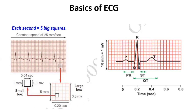In ECG waveforms: P represents atrial depolarization, the QRS complex is depolarization of the ventricles, and T is the repolarization of the ventricles. We will learn each of these in the next slides.